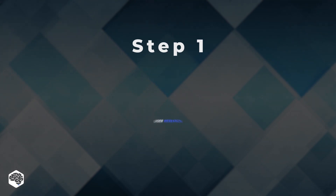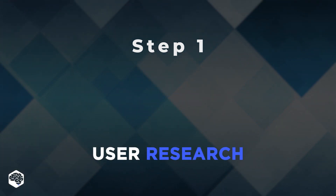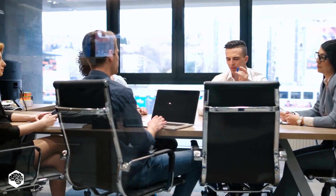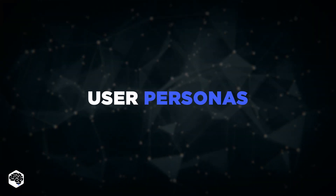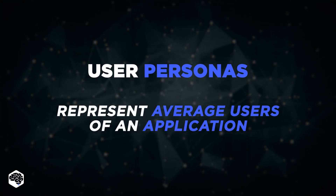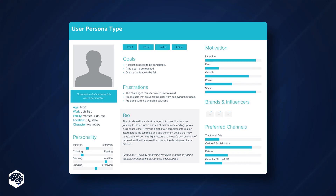The first step is user research. Besides traditional interviews, focus groups, and surveys, the Jelvix team uses such models as user personas. Personas represent average users of an application. In the description, a designer should include needs, motivations, skills, demographic data, as well as social and family status.